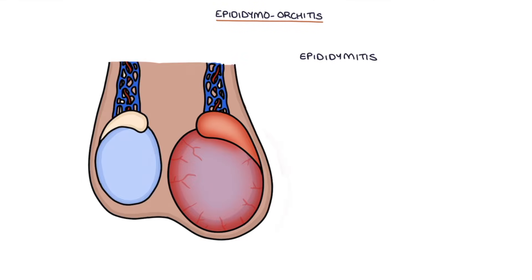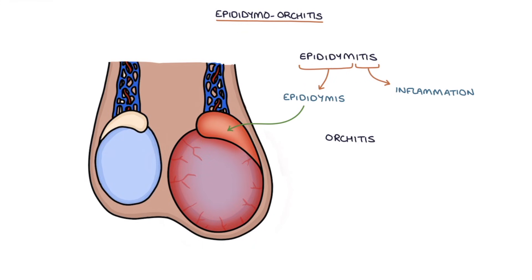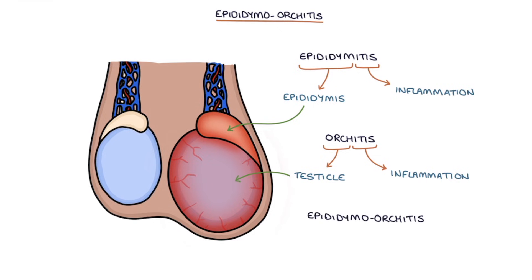Epididymitis is inflammation of the epididymis. Orchitis is inflammation of the testicle. Epididymal orchitis is usually the result of infection in the epididymis and the testicle on one side.